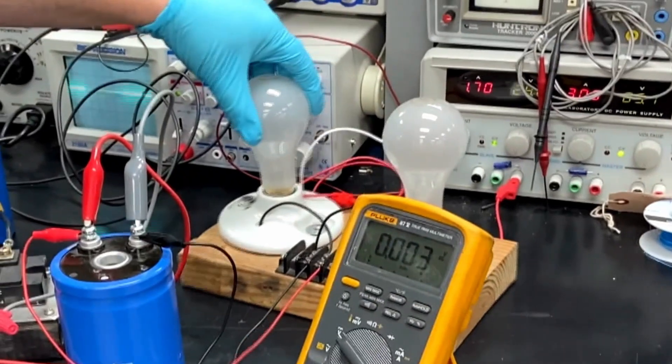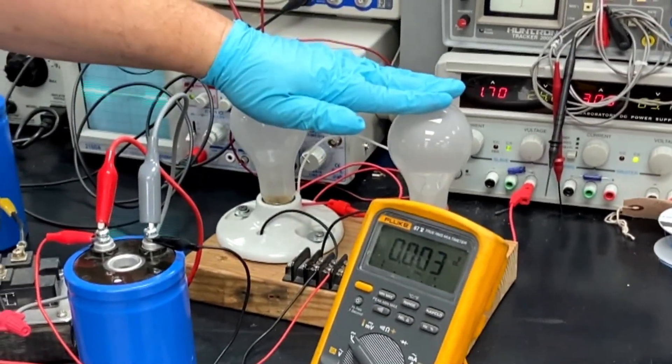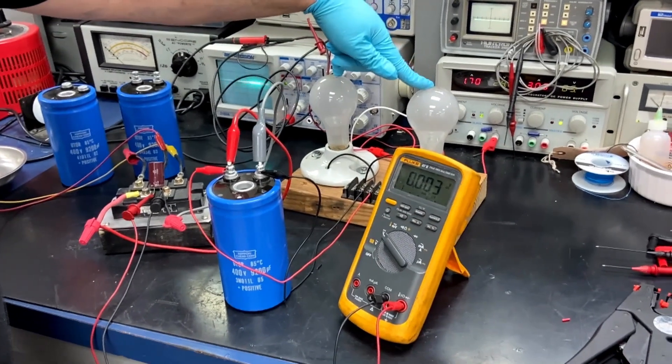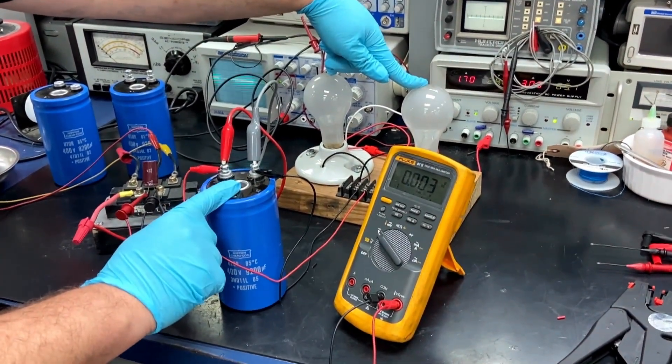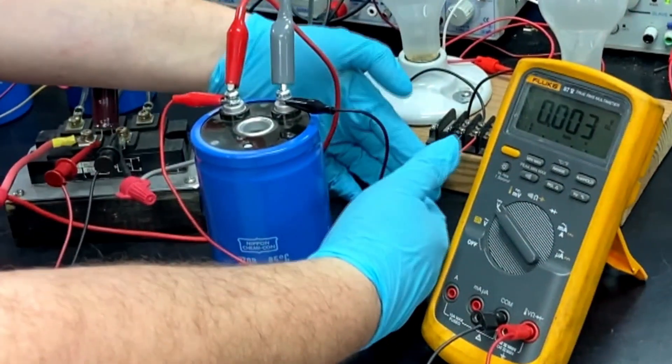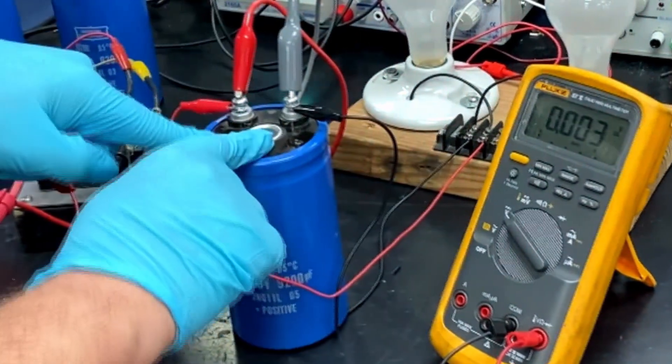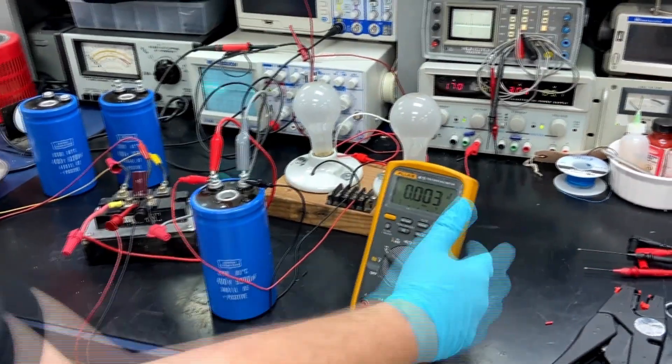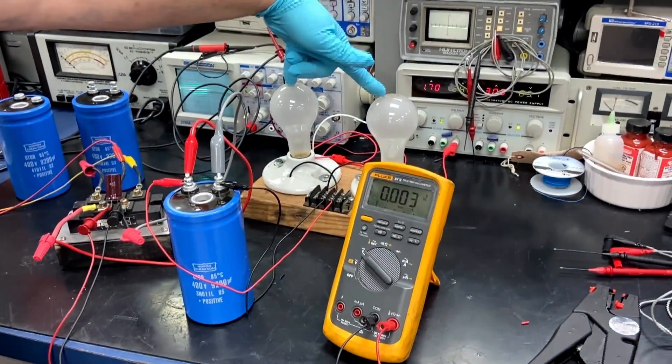And then we have our load which is a couple of high wattage light bulbs. This will prevent the capacitor from drawing too much current too fast resulting in a failure. Here we have the leads going to the capacitor for that load. We will also see the result of the capacitor forming as these light bulbs will get brighter.